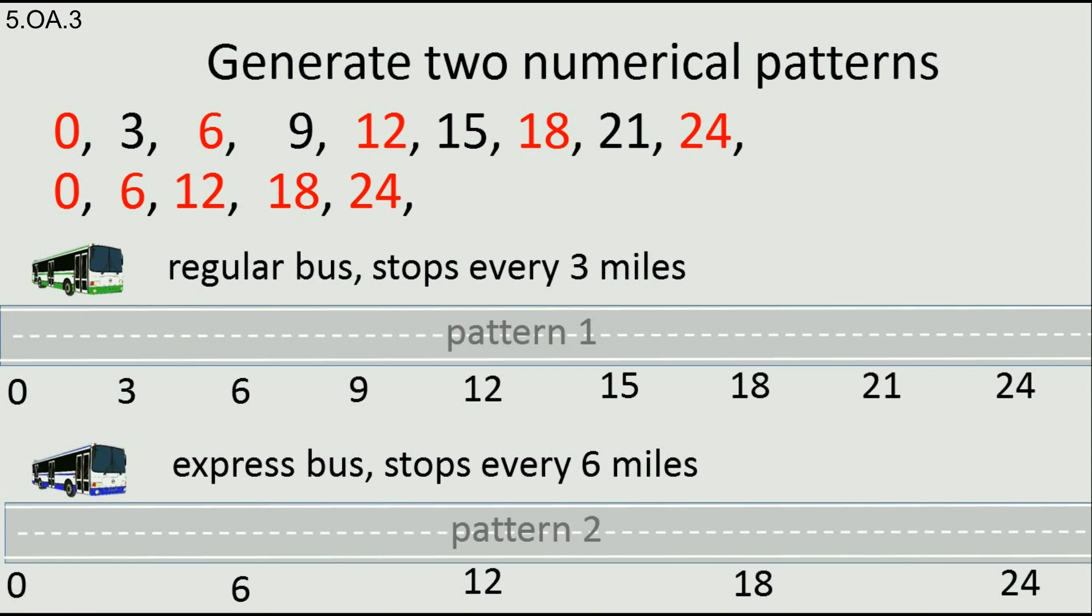The regular bus starts from 0 and stops at 3, 6, 9, 12, 15, 18, 21, and 24 miles. The express bus goes the same road, but stops only every 6 miles. Starts from 0, stops at 6, 12, 18, and 24 miles.